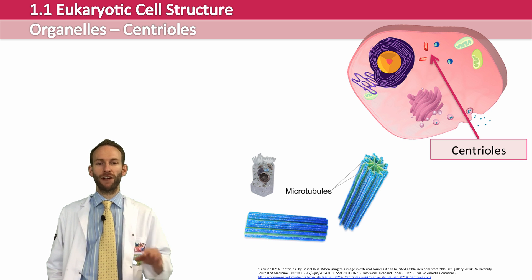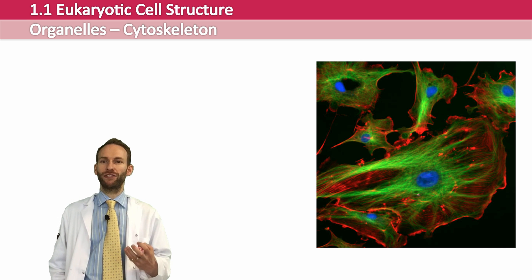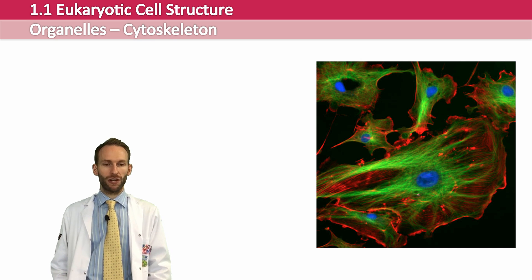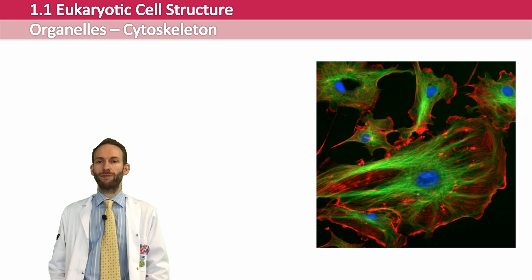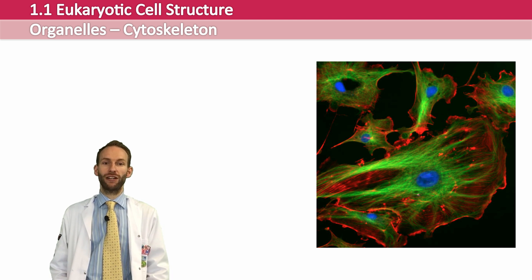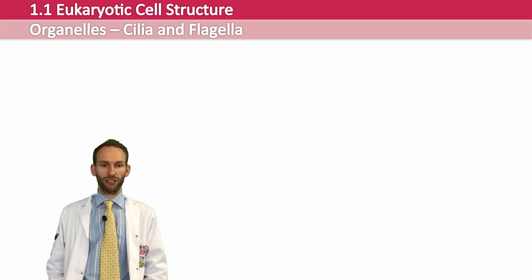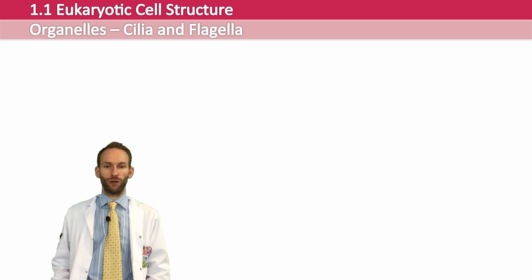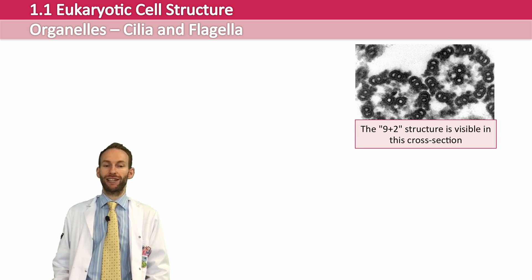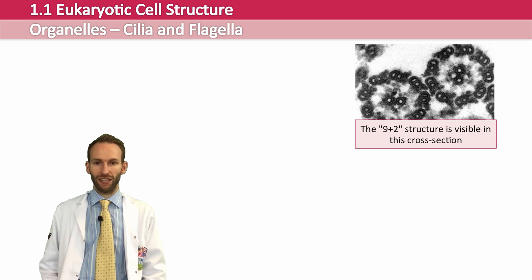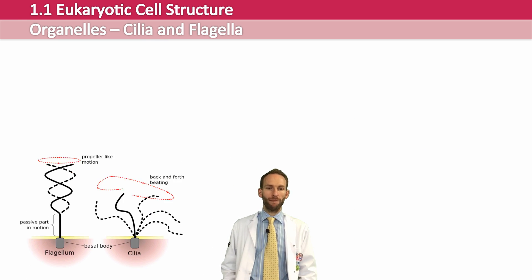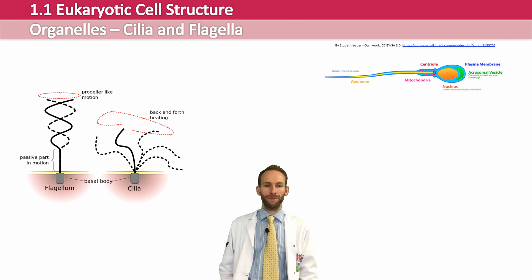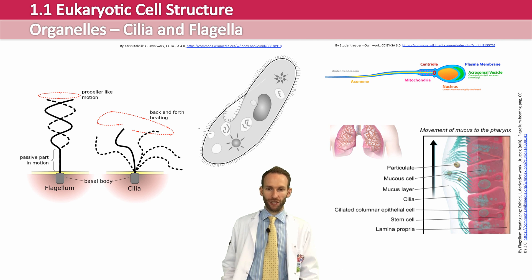Cells also have a cytoskeleton — a fibrous network filling the cytoplasm that gives the cell structure and shape, moves organelles around, and controls the movement of vesicles within the cell. The cytoskeleton is made up of microtubules and protein microfilaments like actin. Eukaryotic cells also have cilia and flagella, which have the same structure. Cells typically possess one or two long flagella, whereas ciliated cells have many short cilia. Their structure is a bundle of nine fused pairs of microtubule doublets surrounding two single microtubules in the middle. Flagella move in a propeller-like motion; cilia beat backwards and forwards. Both need ATP, and are used for cell locomotion — as in sperm or paramecium — or for wafting substances like mucus through the respiratory tract.